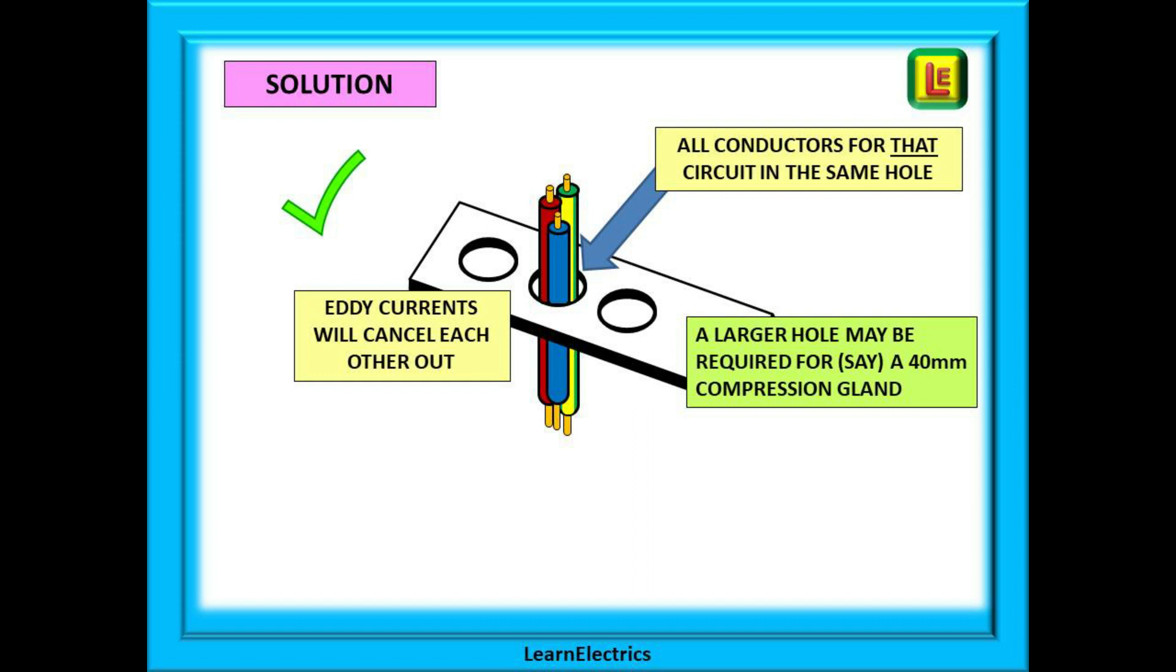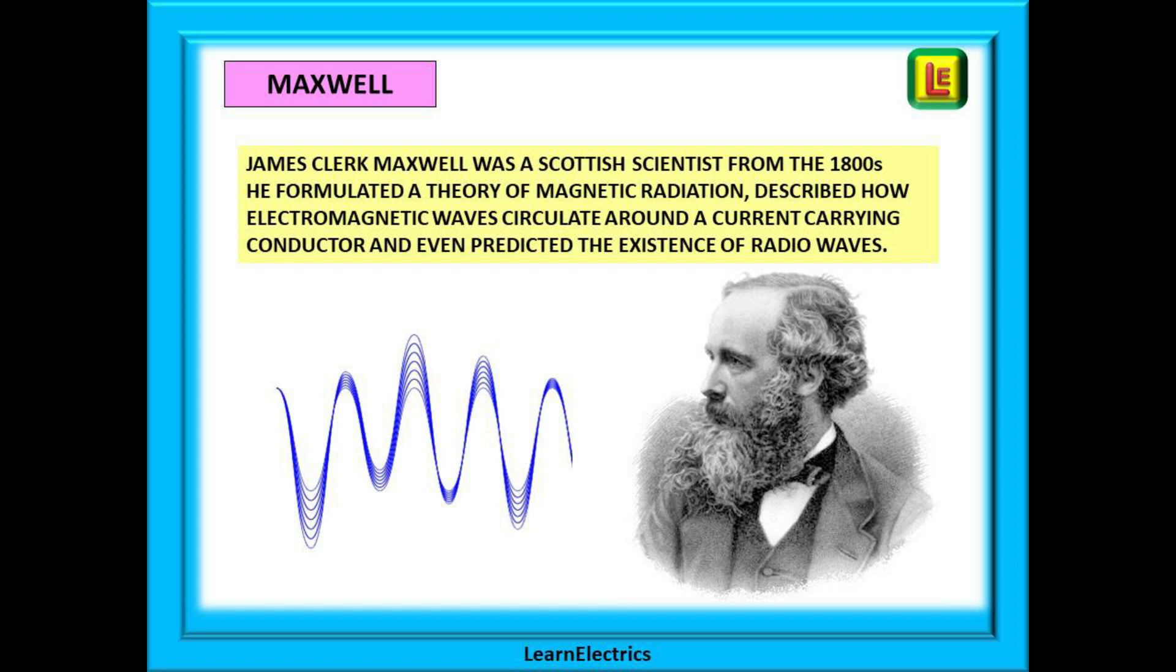Well that was the work of a 19th century scientist. James Clark Maxwell was a Scottish scientist from the 1800s. He formulated a theory of magnetic radiation. He described how electromagnetic waves circulate around a current carrying conductor and he even predicted the existence of radio waves.